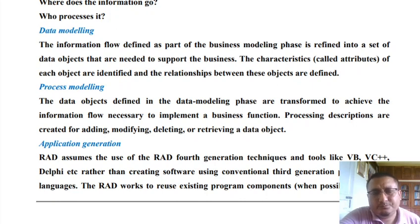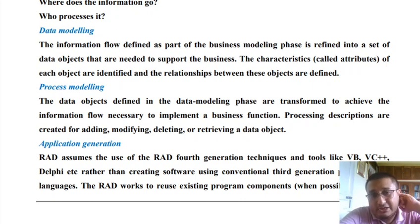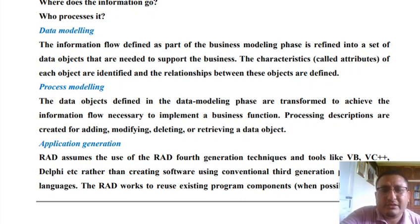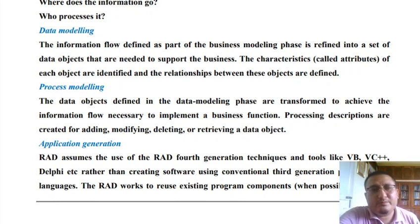For example, in a library management system, one object is 'students,' which has various attributes and behaviors. Another object is 'book,' which also has a set of attributes and behaviors. A relationship can be established, for example, that a user is allowed to borrow zero to N number of books — this establishes a relationship between these two objects and helps in realizing the business. That is the objective of the Data Modeling Phase.